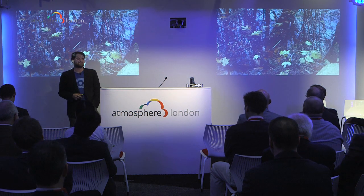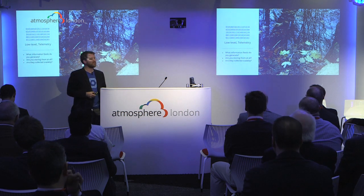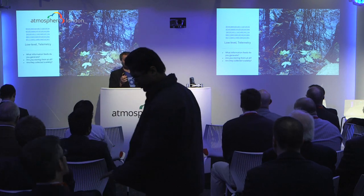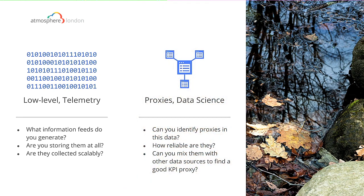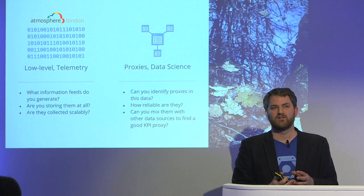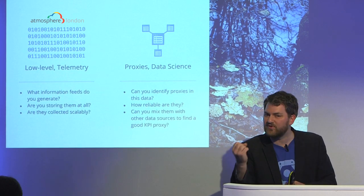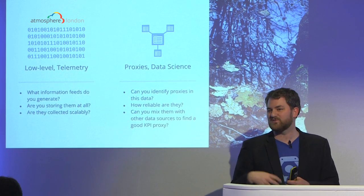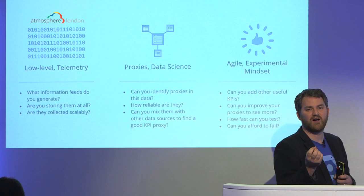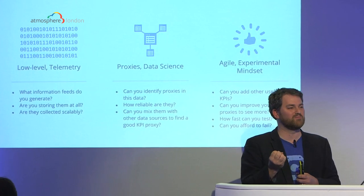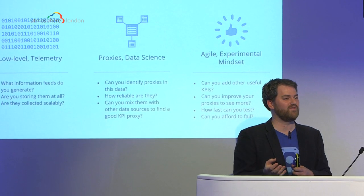So I want to go back to this picture — what does it mean for us? Three key things: first, look for the telemetry streams. What are the information feeds you have? Are they stored? Are they accessible? Are they being collected scalably — i.e., you're not asking people to fill out forms. Second, what are you going to do about identifying proxies? How do you join with other datasets to start saying there's a pretty good indicator here for customer engagement — let's use that, what happens when we act on it?